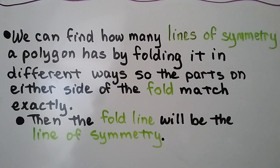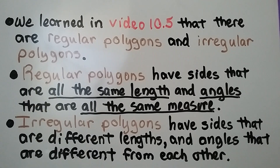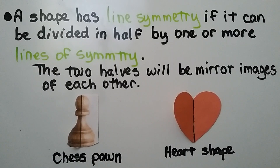We can find how many lines of symmetry a polygon has by folding it in different ways so the parts on either side of the fold match exactly. Then the fold line will be the line of symmetry. Regular polygons have sides that are all the same length and angles that are all the same measure. Irregular polygons have sides that are different lengths and angles that are different from each other. A shape has line symmetry if it can be divided in half by one or more lines of symmetry.